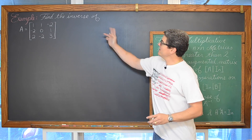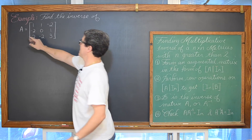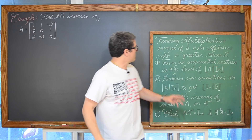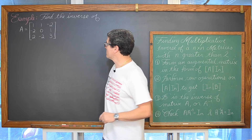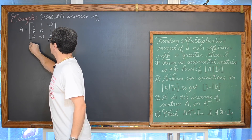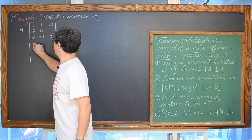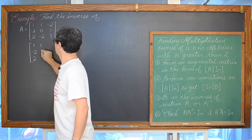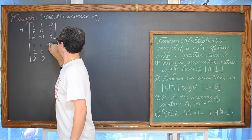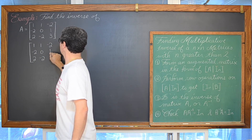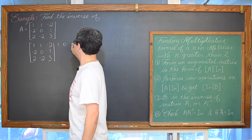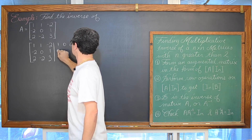So we are going to find the inverse of this matrix A, this 3x3 matrix. We are first going to write that augmented matrix. So we have 1, negative 2, 2, 1, 0, negative 2, negative 2, 1, and 3 — augmented with the identity matrix I sub 3 on the right-hand side.